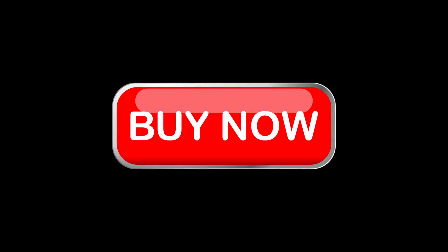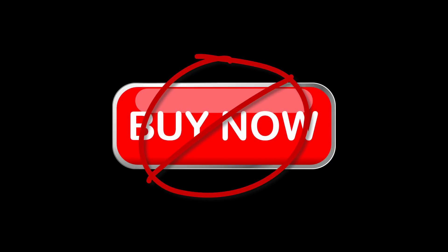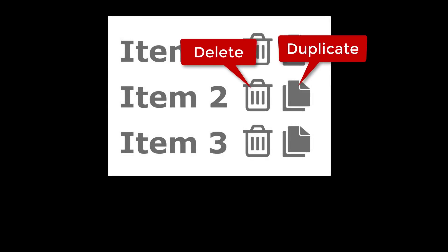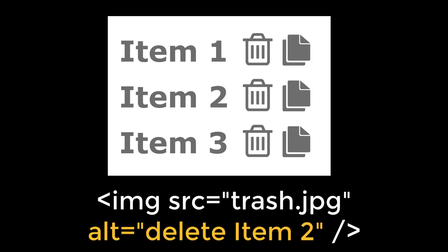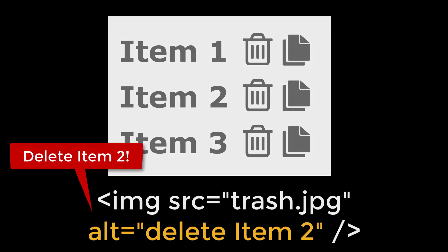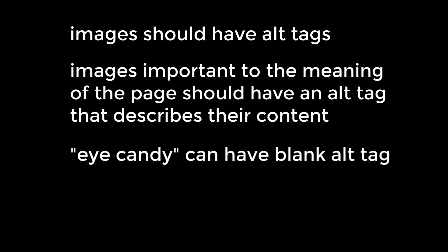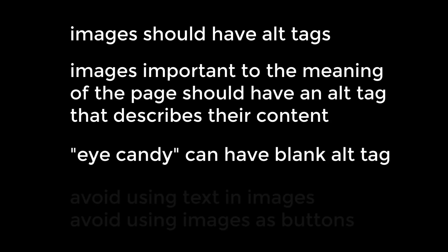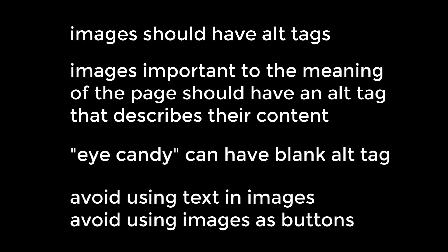Another practice you should avoid is using images as buttons. If your site does have buttons that are images, make sure to include an alt tag describing what the button does. For example, if you have a delete button and a duplicate button but there were no alt tags describing what they did, someone unable to see the buttons would be unable to use those features of your site. To recap: every image on your website should have an alt tag. Images important to the meaning of your page should have a descriptive alt tag, images included purely as eye candy should have a blank alt tag, and you should avoid using text in images or images as buttons.